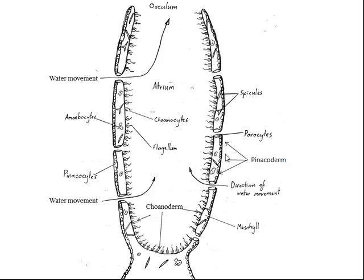Whenever you see the root word 'cyte,' that refers to cell — for instance, the study of cells is called cytology, so 'cyte' equals cell. Pinacocytes are the outside skin layer, and collectively they make up what's called the pinacoderm. Whenever you see the part-word 'derm' in a word, that means layer. So that is the layer made up of pinacocytes — the pinacoderm.